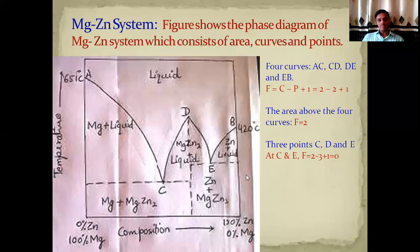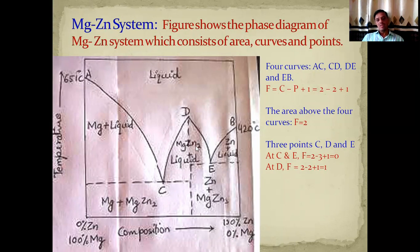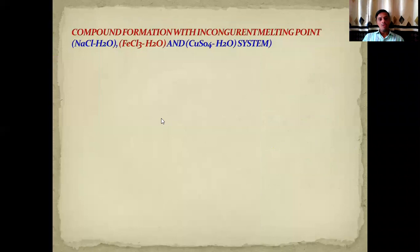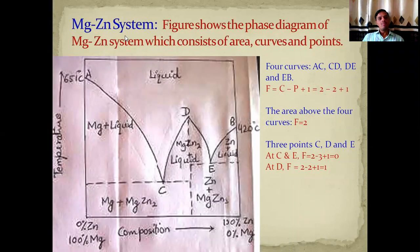At point D, the system is monovariant because only two phases exist in equilibrium: one liquid phase and one solid MgZn₂ phase. With two phases and two components, degrees of freedom equals one. This means that if you fix the value of temperature, the composition gets fixed automatically. That is all about the phase diagram of the magnesium-zinc system.